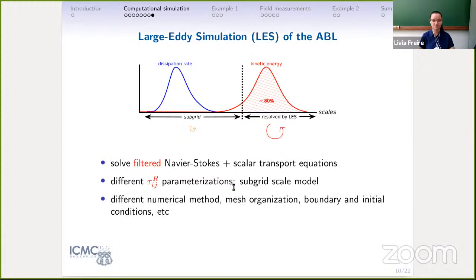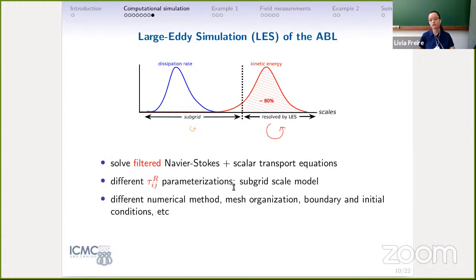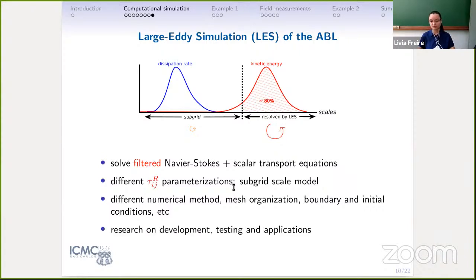We use LES a lot for atmospheric study because the large scales concentrate most of the kinetic energy of the flow. So when we're interested in turbulent transport of scalars and gases, LES does a good job. The small scales concentrate the dissipation rate, which needs to be included in the subgrid model. We solve LES in a three-dimensional domain with the filtered Navier-Stokes and transport equations for all variables of interest, with different options for parameterizations of the subgrid-scale part, numerical methods, mesh organization, and boundary and initial conditions. There is a lot of research still being done in the development, testing, and application of LES codes.